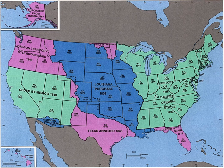Ryukyu Islands: The United States military government of the Ryukyu Islands was the government in Okinawa, Japan from 1945 to 1950, whereupon it was replaced by the United States Civil Administration of the Ryukyu Islands from 1950 until 1972.